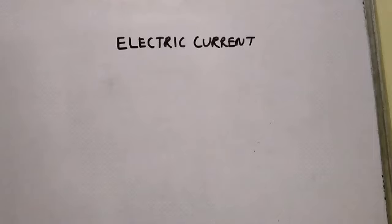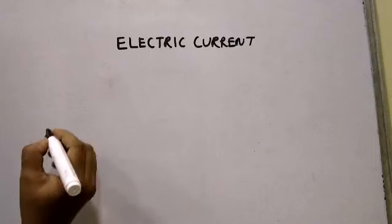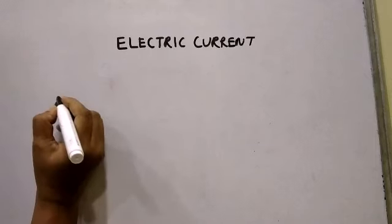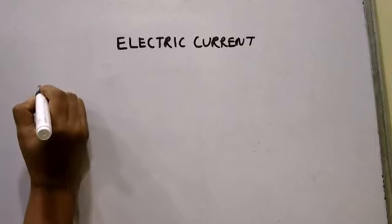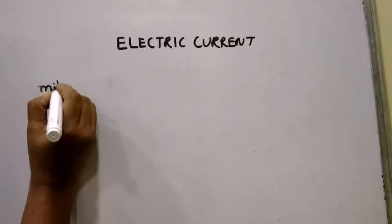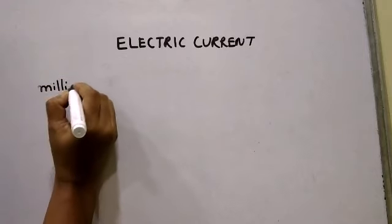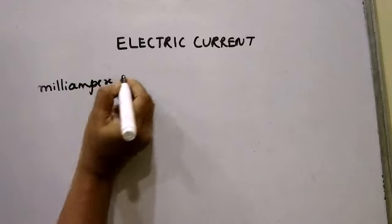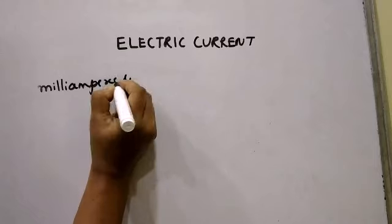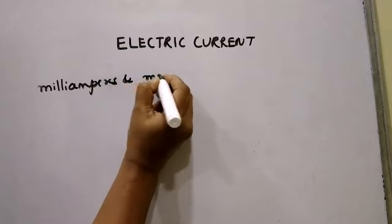Let us see the small units for measuring electric current. Small currents are measured with units like milli-amperes and micro-amperes.